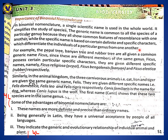For example, the peepal tree, banyan tree, and rubber tree all share the common generic name Ficus. Since these are different members of the same genus, each possesses certain particular specific characters, so they are given different specific names: Ficus religiosa for the peepal tree, Ficus bengalensis for the banyan tree, and Ficus elastica for the rubber tree respectively. The genus Ficus is written with a capital letter. The specific names differ because each tree has different properties, but the genus remains the same.